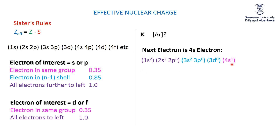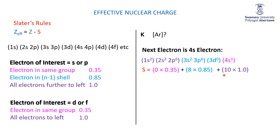The argon core is those 18 electrons, and we're putting the 19th electron in the 4s¹. Color coding: the pink group has nothing else (only one electron in 4S, can't shield itself). The N−1 shell is the third shell — all 8 electrons are worth 0.85. The first and second shells (10 electrons total) are further to the left, so they contribute 1.00 each. S = (0 × 0.35) + (8 × 0.85) + (10 × 1.00) = 0 + 6.8 + 10 = 16.8. The effective nuclear charge for the 4S electron: 19 − 16.8 = 2.2.